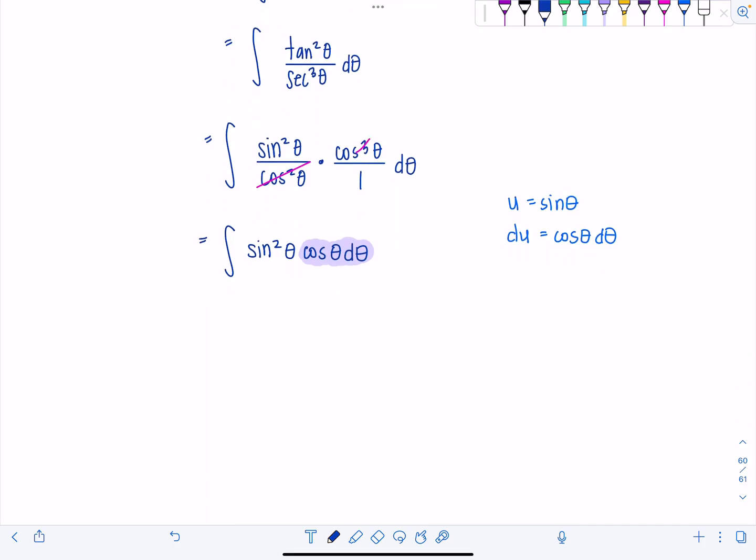Oh my goodness. So then now we have integral u squared du, right? So clean. Antiderivative, one-third, u cubed plus c. And then u was sine theta, so this is one-third sine theta cubed, or sine cubed theta plus c.